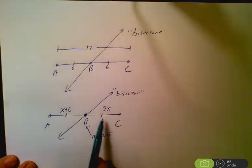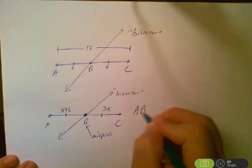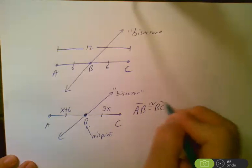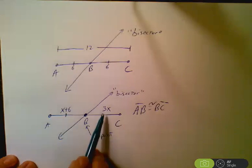So if this piece here, AB and BC are congruent, right? If AB is congruent to BC, well then that means that X plus 6 must be the same as 3X.